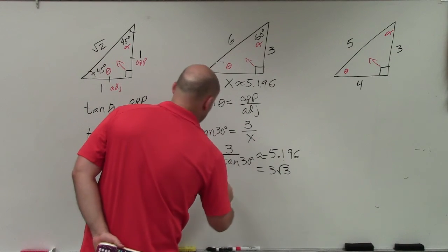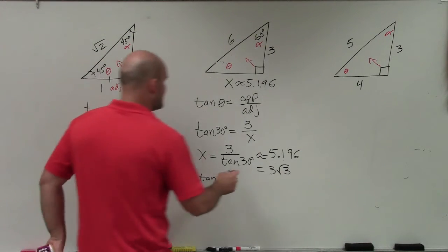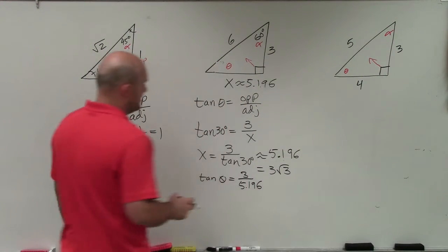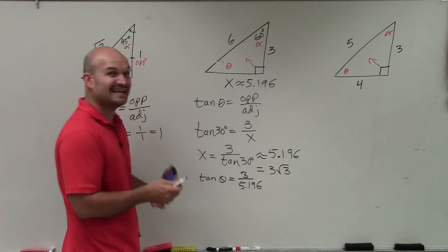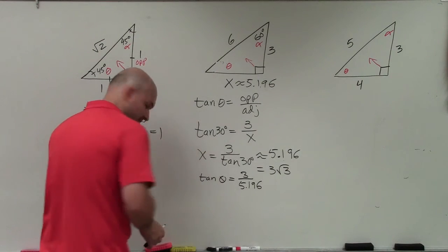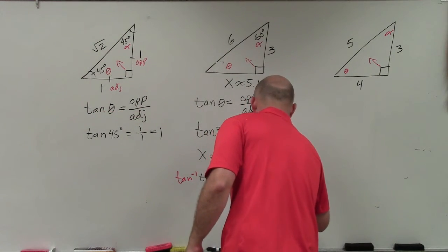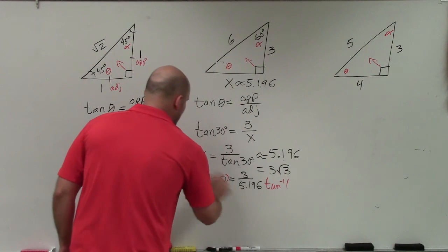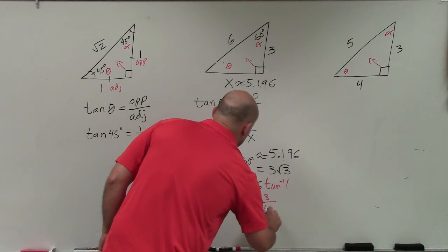So we're going to use the same process. I'm going to say tangent of theta is equal to opposite over 5.196. Now, I need to solve for theta. But it's tangent of theta, right? So to undo the tangent function, what we're basically going to do is use the inverse function. So I'm basically going to take the tan inverse of both sides. Therefore, what that gives us is theta is equal to the tangent inverse of 3 divided by 5.196.